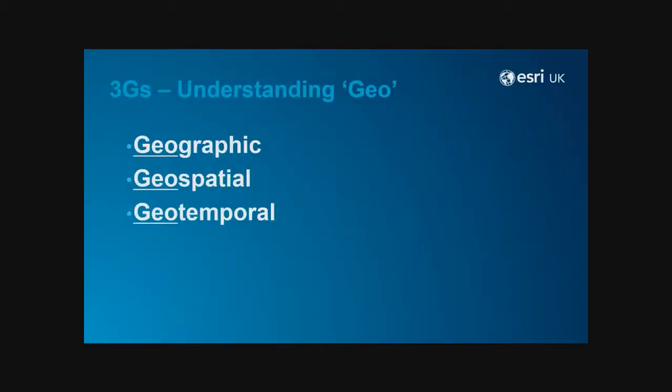But it's so much more than geographic. The term comes from 50 years ago, but there are actually three Gs. There's the geographic — we're able to represent, visualise and analyse both the human and the physical geography. That allows us to do things such as understanding social demographics, where people live, analyse roads, do routing, and understand line-of-sight type analysis — anything to do with the physical world.